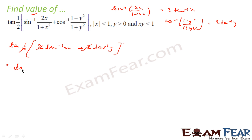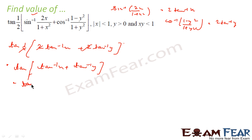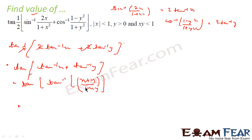This simplifies to tan(tan⁻¹x + tan⁻¹y). We can directly apply the formula: tan⁻¹x + tan⁻¹y = tan⁻¹[(x+y)/(1-xy)]. So the final result is (x+y)/(1-xy).